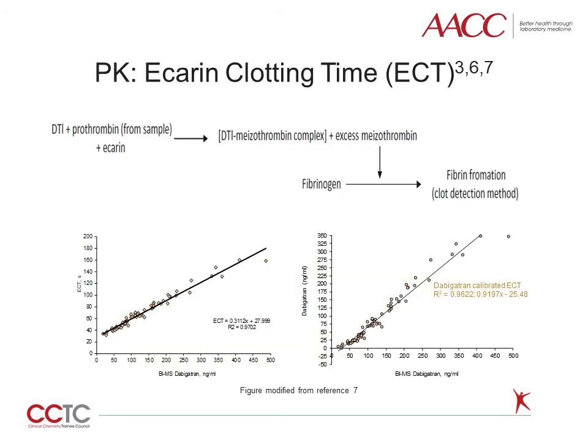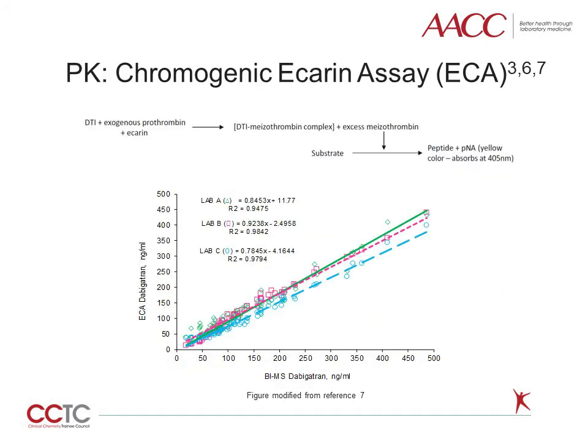This slide depicts the ECRIN clotting time assay without calibration, on the left, and with calibration using a Dabigatran calibrator, on the right, as compared to a mass spectrometry method. The assay demonstrates a linear response to drug over a broad therapeutic range. Both the ECRIN reagent and the Dabigatran calibrator are labeled RUO. One disadvantage of this assay is the lot-to-lot variability that can occur with the ECRIN reagent. These data from the ECRIN chromogenic assay calibrated with a Dabigatran calibrator, performed in three different laboratories as compared to a mass spectrometry method, show good agreement between testing locations with a linear response to drug over a broad drug concentration. This assay is also labeled RUO.